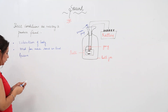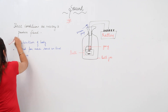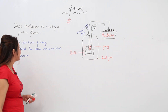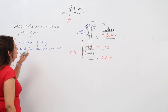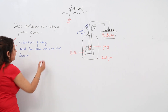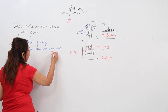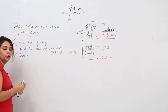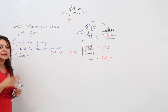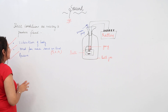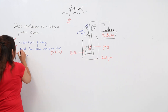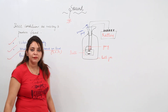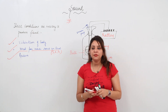So these are the three conditions to produce sound: one is the vibrating body; second, sound needs a medium to travel — the medium can be solid, liquid, or gas; and third, there should be a receiver who can actually listen to the sound.